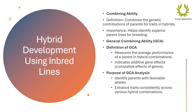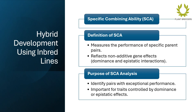The purpose of GCA analysis is to identify parents with favorable alleles and enhance traits consistently across various hybrid combinations. Specific combining ability (SCA) measures the performance of specific parent pairs and reflects non-additive gene effects, including dominance and epistatic interactions.